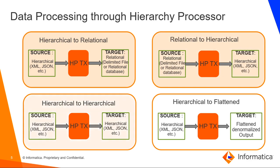The third one is hierarchical to hierarchical — this is for converting one or more hierarchical input groups to a single hierarchical output group with a different schema. The fourth one is hierarchical to flattened denormalized output, which converts one hierarchical input group to a single flattened denormalized output.